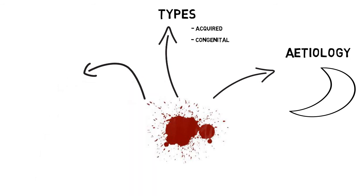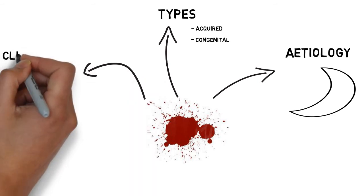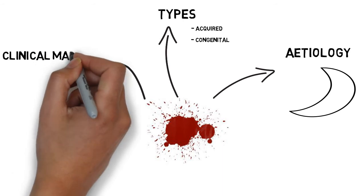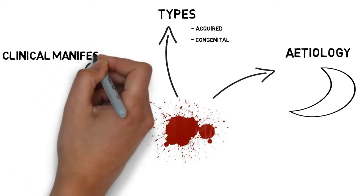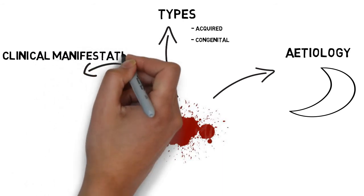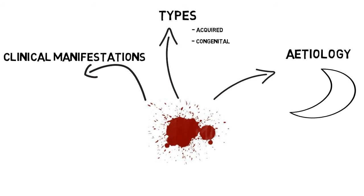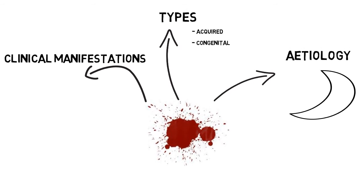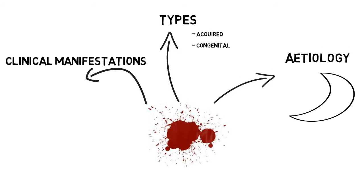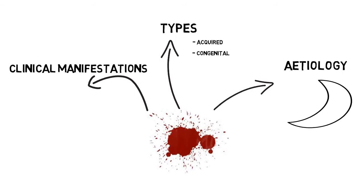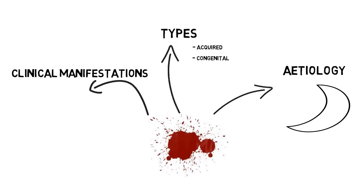Moving to the clinical manifestations of these two: the clinical manifestations of thalassemias can be broken into two — those that affect erythropoiesis and those that affect the hemolytic side of things.